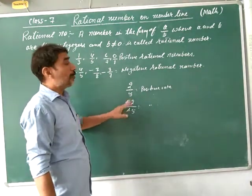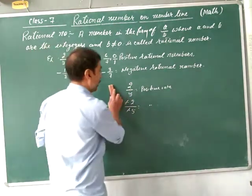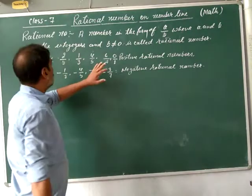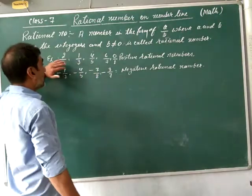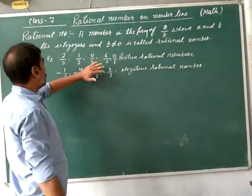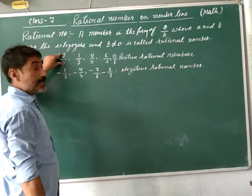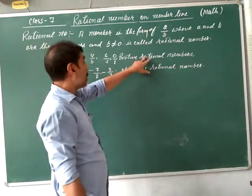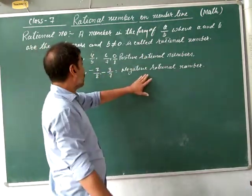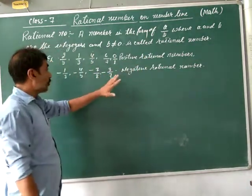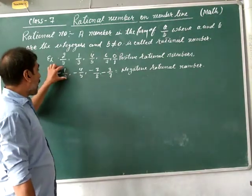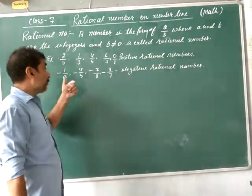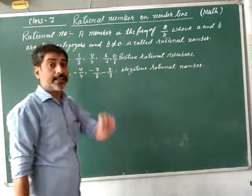Positive rational numbers are rational numbers which have positive integers. Negative rational numbers are those in which each of the two integers are negative.